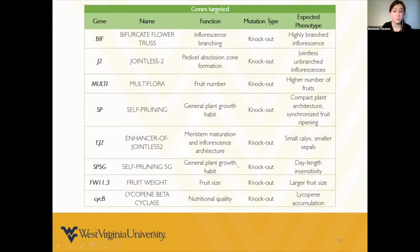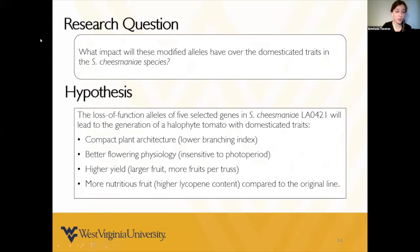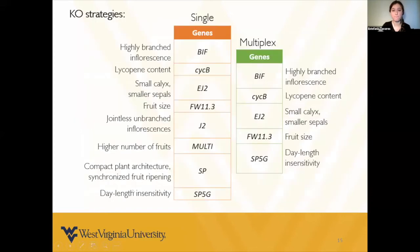These are the genes I am using to knock out to generate single mutants in tomato, and these are the phenotypes that will be affected by these loss-of-function alleles. By generating these knockouts, we aim to achieve a compact plant structure, better flowering physiology, higher lycopene content, and a more nutritious fruit. I am generating single mutant plants for this tomato and also taking a parallel approach to knock out five genes simultaneously to affect multiple phenotypes at once.